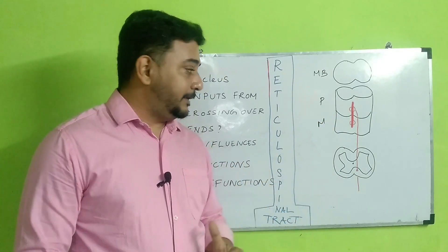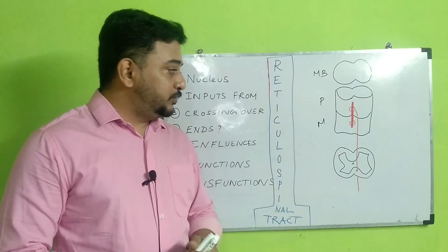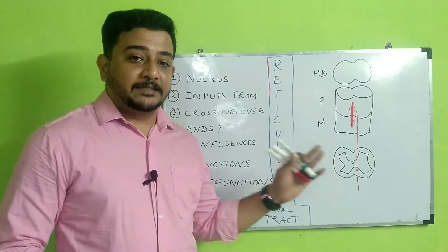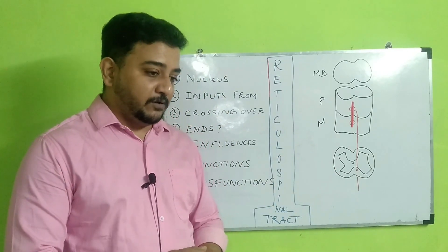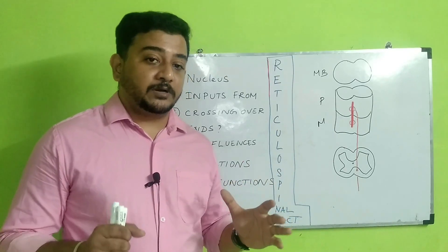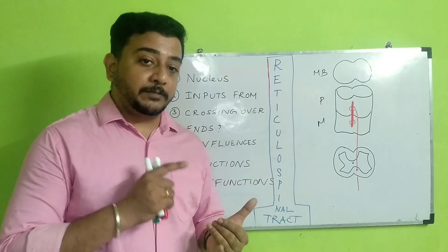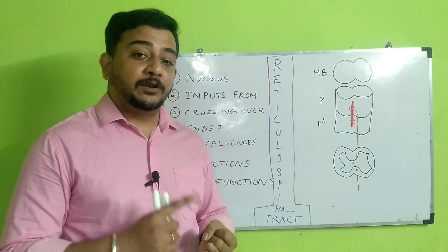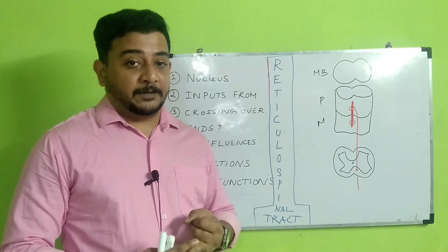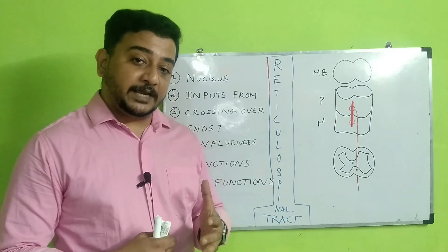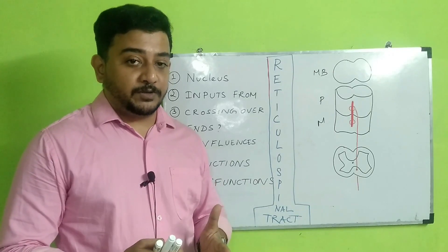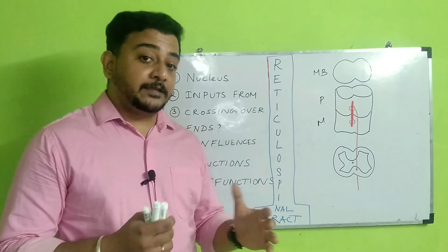It is a long axial structure which runs from the pons to the medulla, located medially. We are going to see seven crisp points on this reticulospinal tract. This tract is very important because it is essential for both posture as well as locomotion. That is why this particular tract is closely associated with the pyramidal tract in bringing about controlled locomotion.